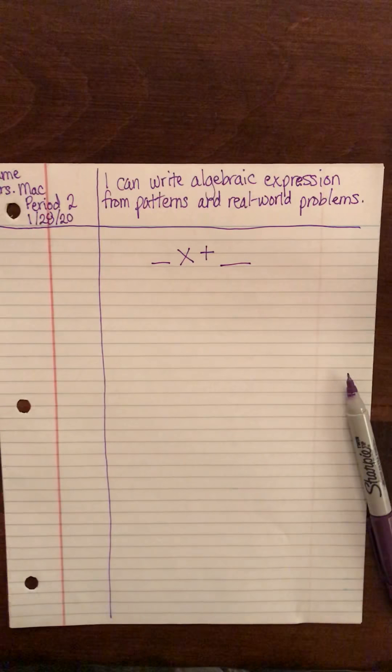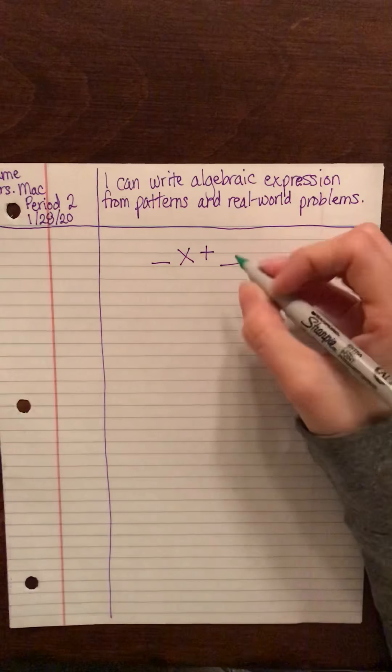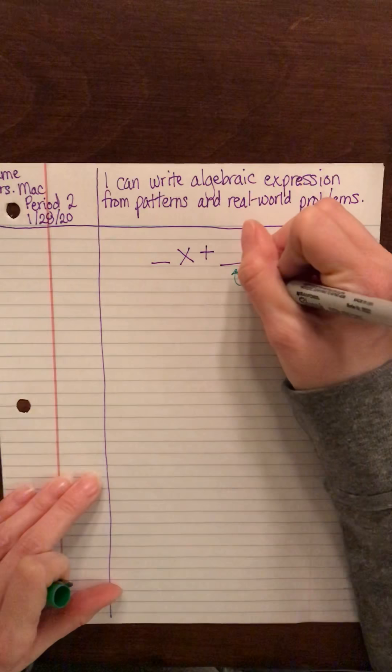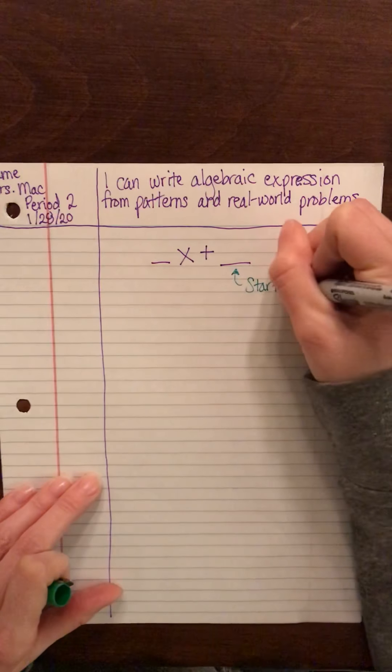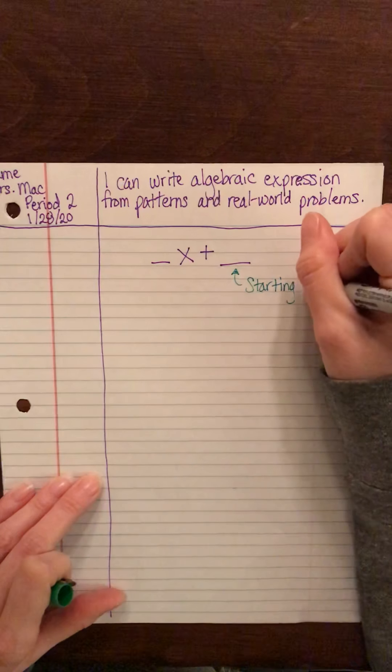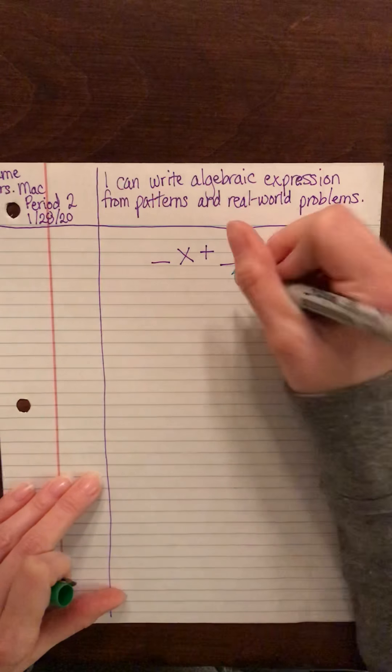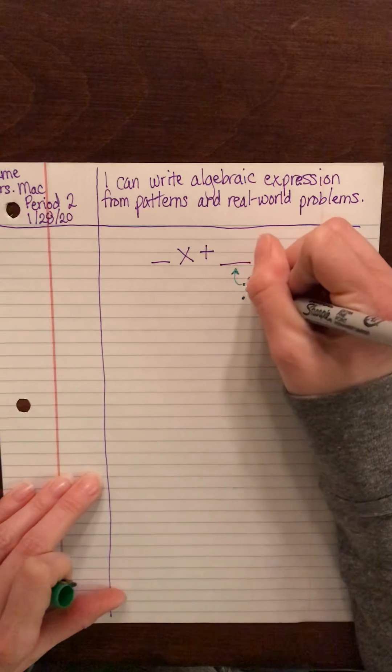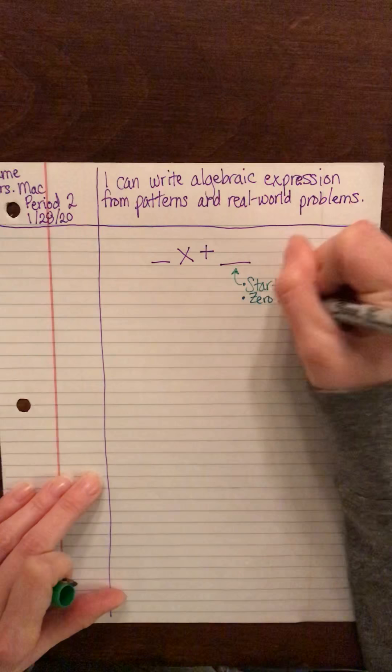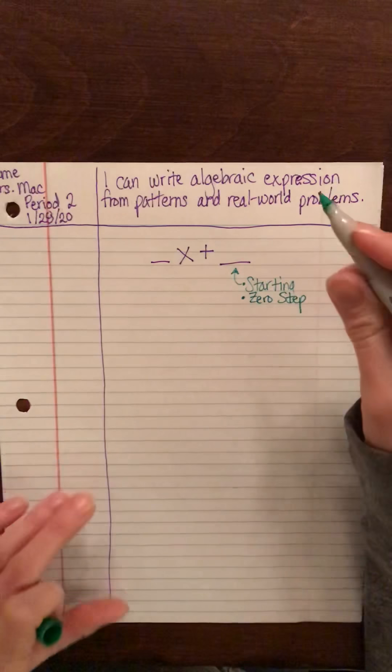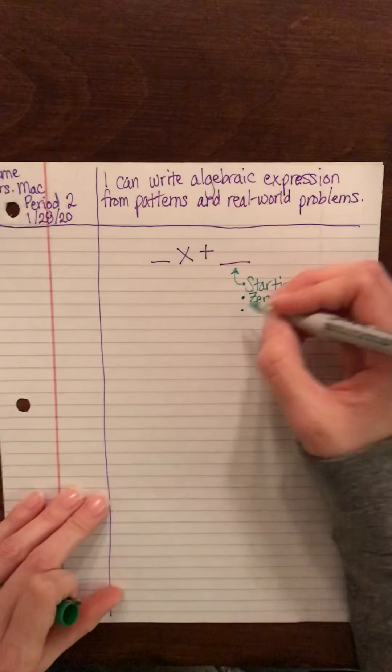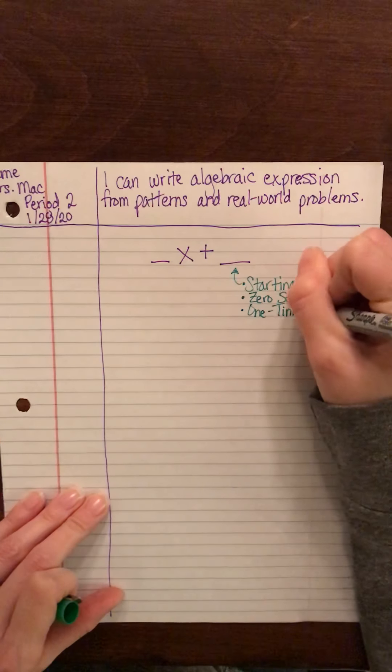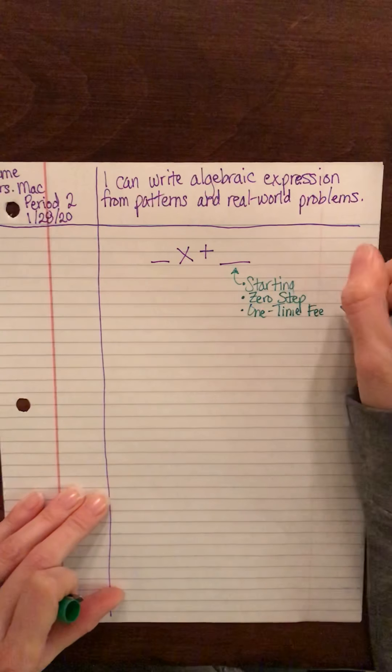So this number that's added on the end is always what you start with. So starting, or we can also say where you start when you're at the zero step. And I'll go over what that means in just a second. It can also be like a one-time fee or bonus.